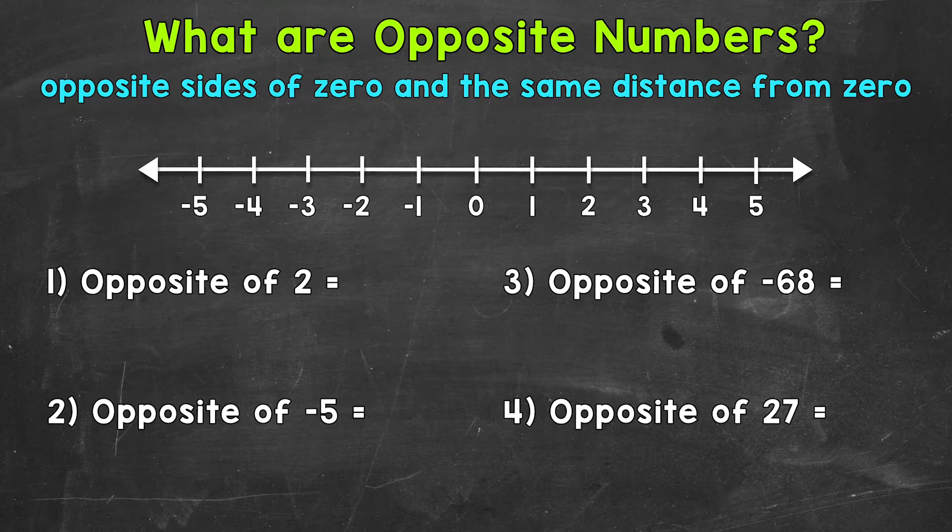Starting with number one, where we have the opposite of positive two. We're going to use a number line for number one to help us better understand opposite numbers. So positive two is right here. And as far as distance from zero, well, one, two. We have a distance of two from zero. And since we were working with a positive two, we were to the right of zero.